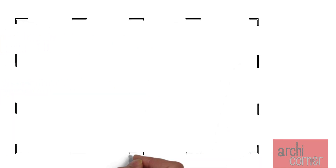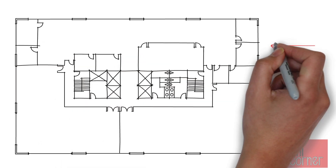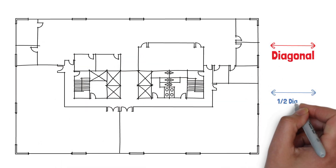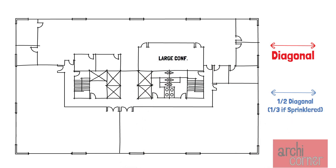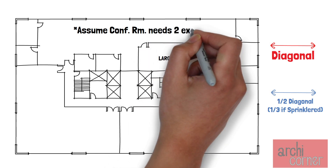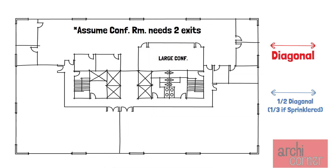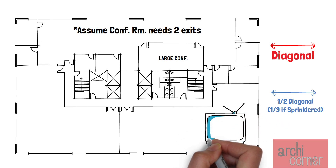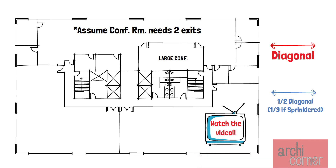Now we need to look at each individual suite. As an example, let's look at suite number 1's layout. We already know that the suite as a whole needs two exits. But as you can see in the layout, suite number 1 has a large conference room. For the sake of this example, let's assume that this conference room also needs two exits. A link to a video will pop up if you want to know when the IBC requires two exits. If the large conference room needs two exits, we need to check the diagonal dimension to figure out the distance. The large conference room's longest diagonal is this one, and therefore the distance between exits has to be half the diagonal dimension — or one-third if it's sprinklered.